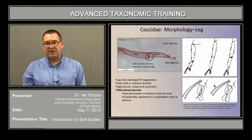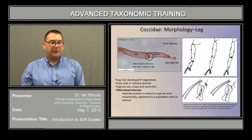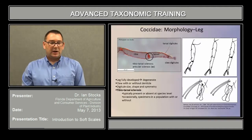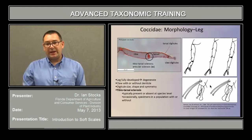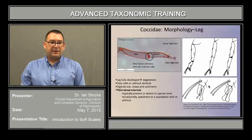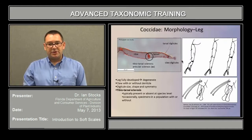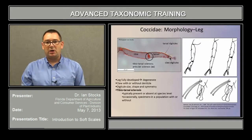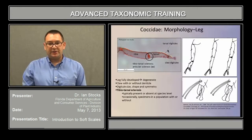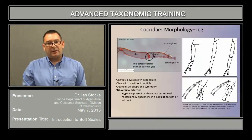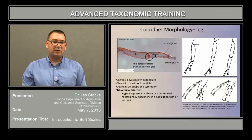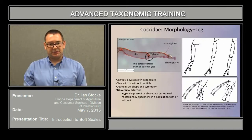Legs, when present, are also taxonomically very informative, but they can vary from being fully developed to almost completely degenerate. Also important is the claw, and whether it has or lacks a denticle, and the characteristics of the structures known as digitules, which appear on both the claw and the tarsus. The shape, size, and degree of asymmetry in these digitules is taxonomically informative. Generally though, the most important character is the presence or absence of the tibiotarsal sclerosis, otherwise known as the articular sclerosis, which is present in this picture here.